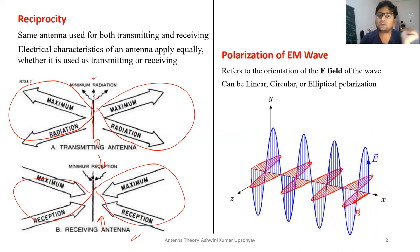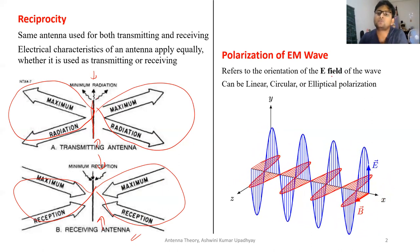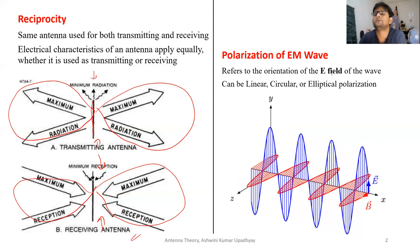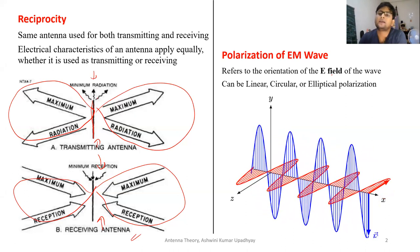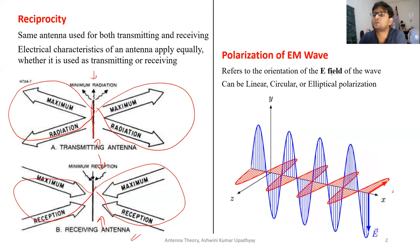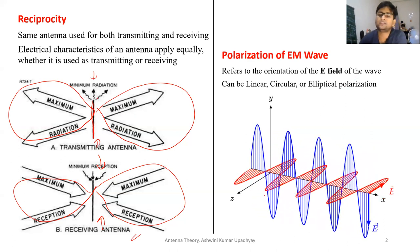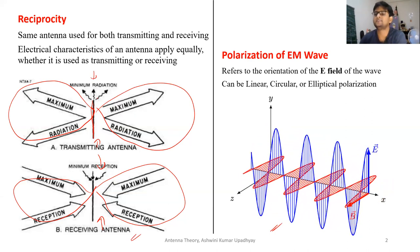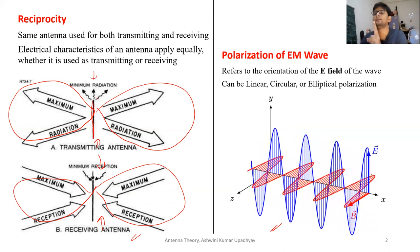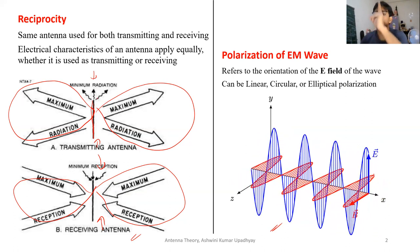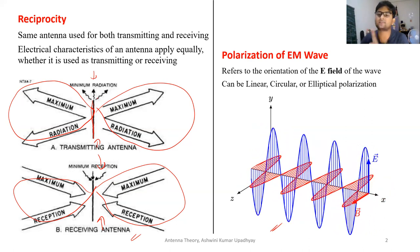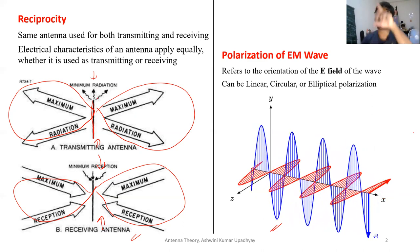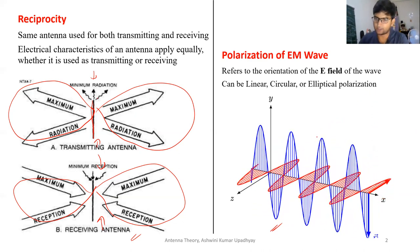The properties or characteristics of the antenna remain the same whether you are using it as a receiver or as a transmitter. Now talking about the polarization of EM waves: the polarization of any EM wave refers to the orientation of the electric field. This orientation can either be linear, circular, or elliptical. This blue line represents the electric field oscillating along the y-axis.